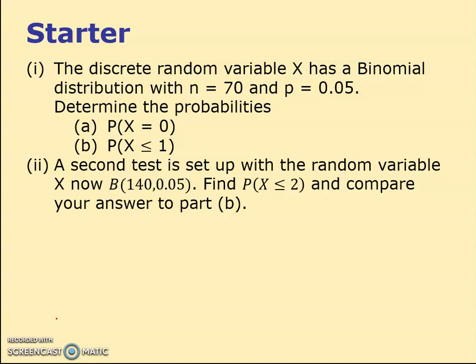The discrete random variable X has a binomial distribution, so X is binomial. N is 70 and P is 0.05. I'm just showing the distribution as we should know how to write it. It says determine the probabilities that X equals 0.